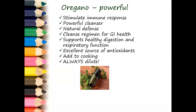Oregano is the big daddy for the tougher things melaleuca can't handle — it's like nature's antibiotic. It helps with your immune system and natural defense, cleanses your gut, helps with digestion and respiratory function, and is an excellent source of antioxidants. You can cook with it. Always dilute this one — it is a super hot oil.